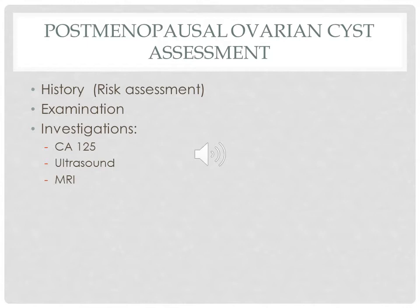For risk assessment, there are certain risk factors especially in family history which increase the patient's risk for developing ovarian cancer. For examination, our aim is to do general, abdominal, and pelvic assessment. By general examination we emphasize the importance of high body mass index. By abdominal assessment we look for any palpable pelvic or abdominal mass or ascites. By pelvic assessment we search for criteria of the mass regarding nodularity, tenderness, and irregularity of the surface. Investigations include CA125, ultrasound, and MRI as a second line.